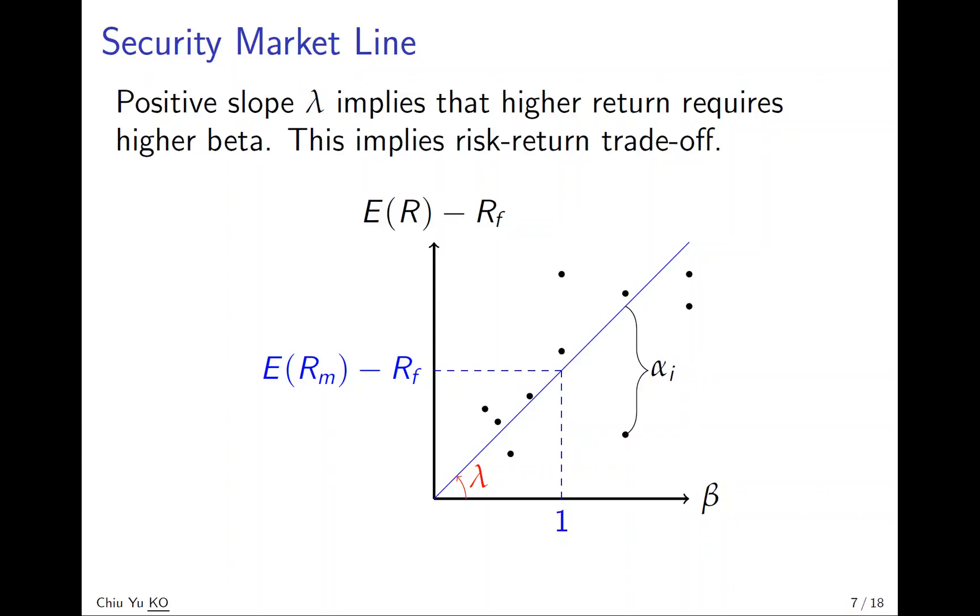What it looks like is what we call the security market line. When you try to plot them, the x-axis is the beta, the y-axis is the market excess return. You try to plot them in a scatter plot. You notice that there is very much a positive relationship. You can see the lambda is positive.